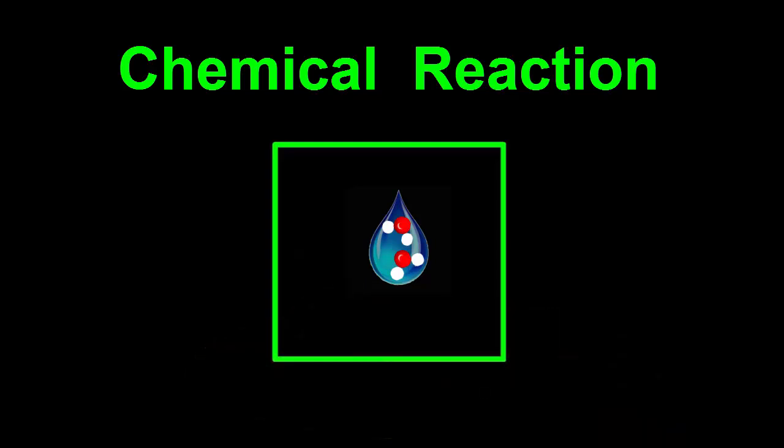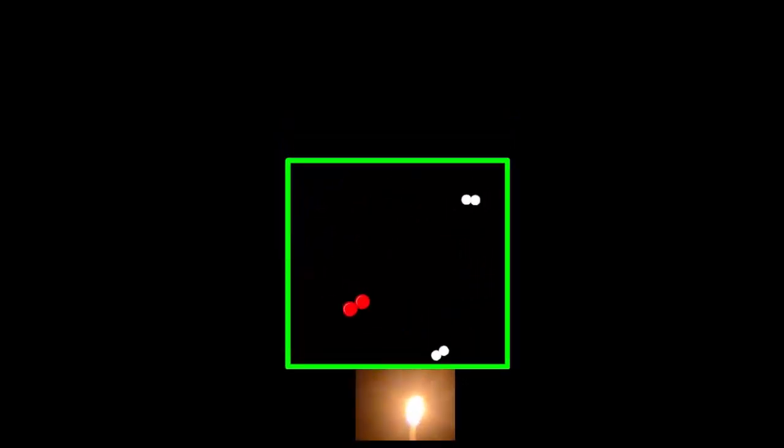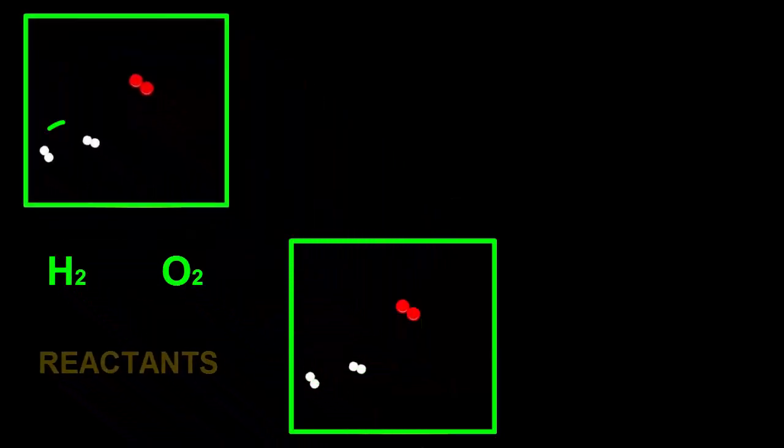We'll replay this chemical reaction to show three snapshots in time as it goes through different stages. At the beginning, there were two H2 molecules and one O2 molecule. These starting substances are called the reactants.